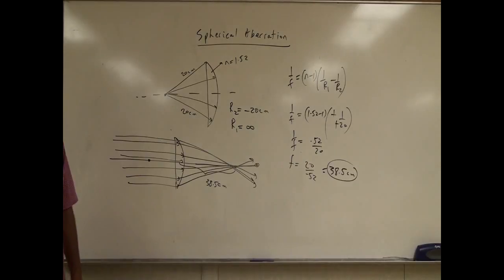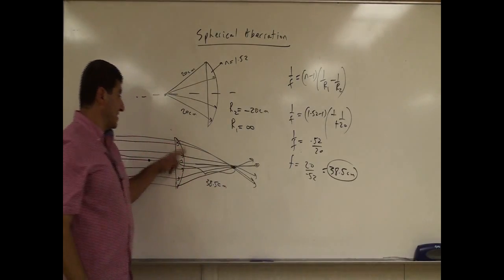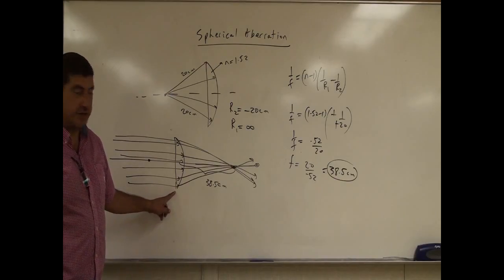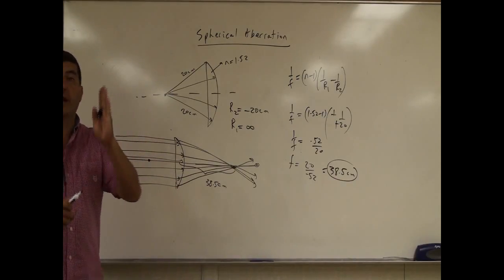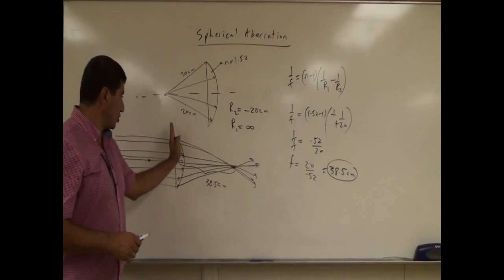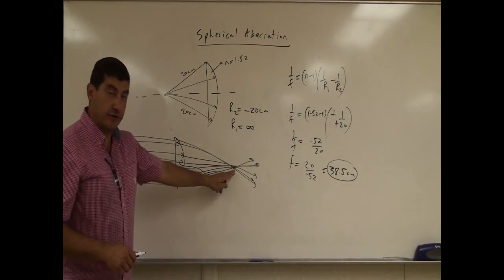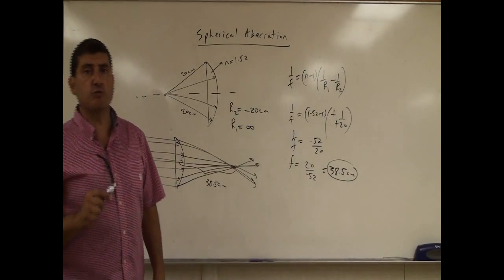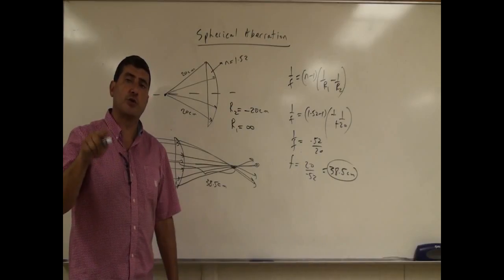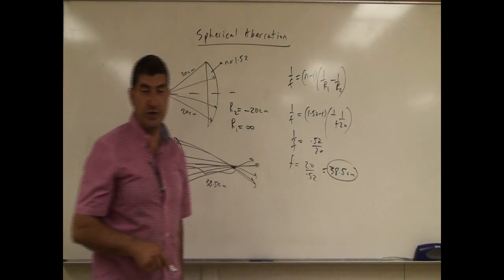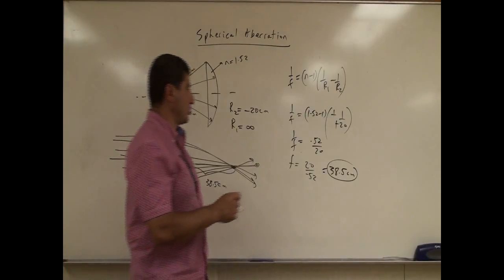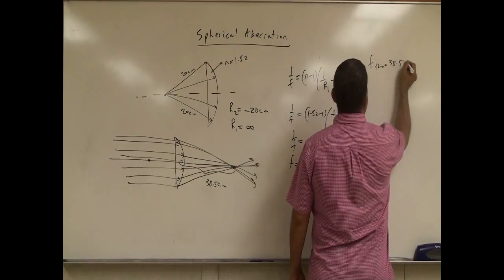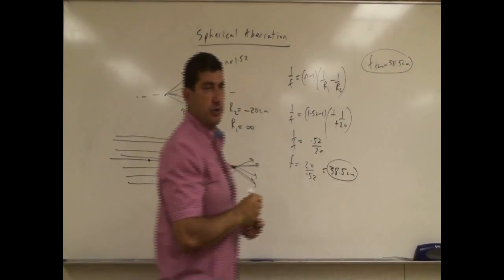It turns out that it's actually not going to be exactly like that, because this lens is spherical. The best way to prevent this from happening is to have a parabolic lens — the shape has to be cut in a parabola so that all rays of light actually go through the focal point. In this problem, we're going to prove that all rays of light do not go through the focal point at 38.5 centimeters, which is our theoretical focal point.